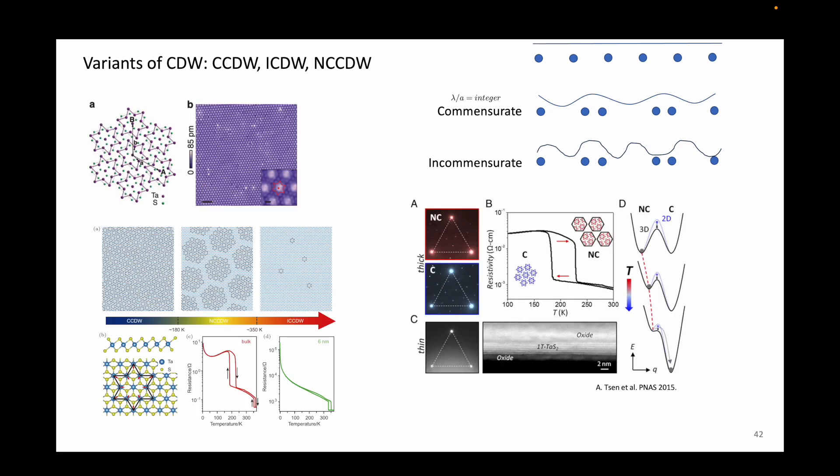1T tantalum disulfide has all these phases in one, for example, and the changes in the resistance across the different phases are quite sharp.